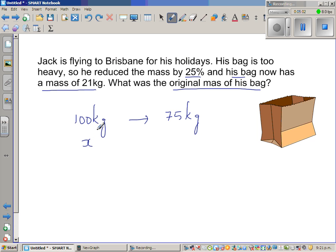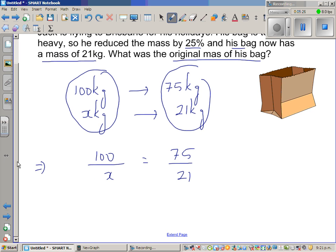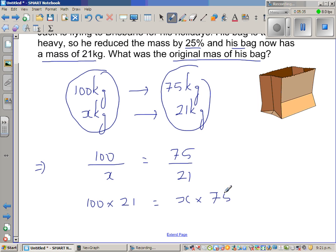So if it was x kg, this is the original amount. Now it has become 21 kg. So the ratio of this is equal to the ratio of this. So this implies 100 over x is equal to 75 over 21. So let's cross multiply. So that is 100 times 21 is equal to x times 75.